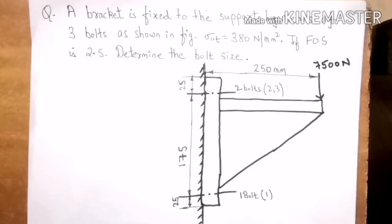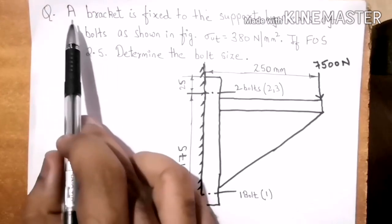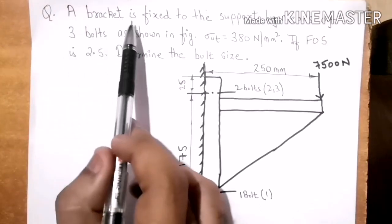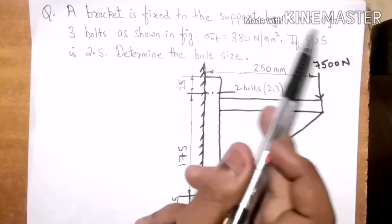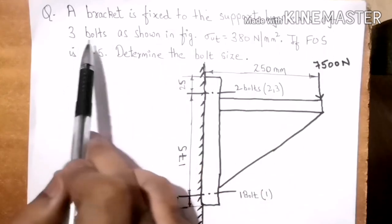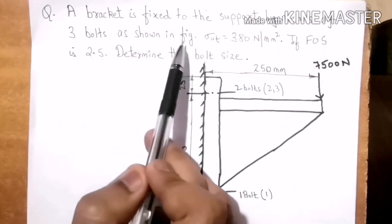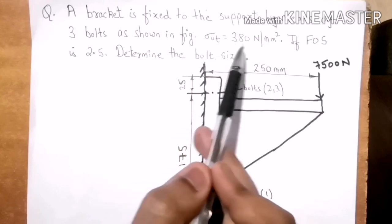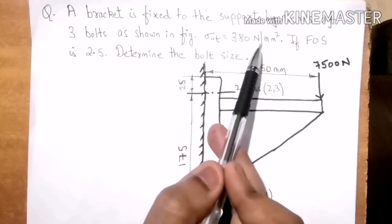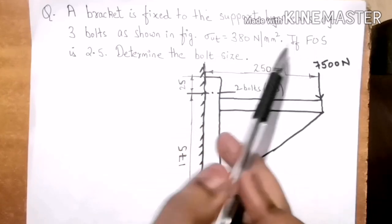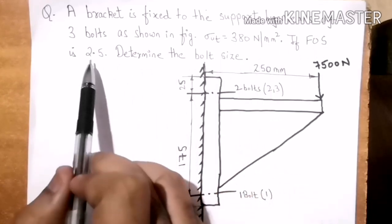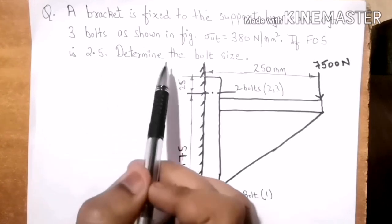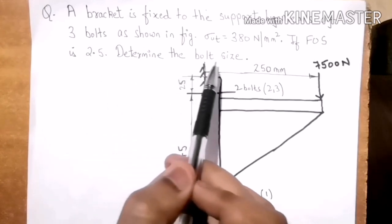Let us go to the next problem which says: a bracket is fixed to a support by means of 3 bolts as shown in the figure. The ultimate stress is 380 MPa; if the factor of safety is 2.5, determine the size of the bolts.